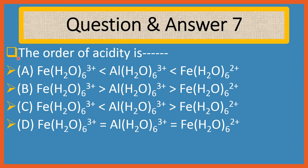Question 7. The order of acidity is. Choices are: A. [Fe(H2O)6]3+ less than [Al(H2O)6]3+ less than [Fe(H2O)6]2+. B. [Fe(H2O)6]3+ greater than [Al(H2O)6]3+ greater than [Fe(H2O)6]2+. C. [Fe(H2O)6]3+ less than [Al(H2O)6]3+ greater than [Fe(H2O)6]2+. D. [Fe(H2O)6]3+ equals [Al(H2O)6]3+ equals [Fe(H2O)6]2+.